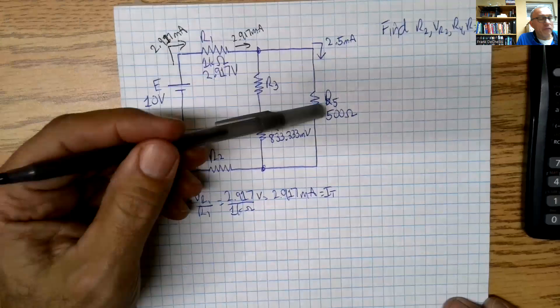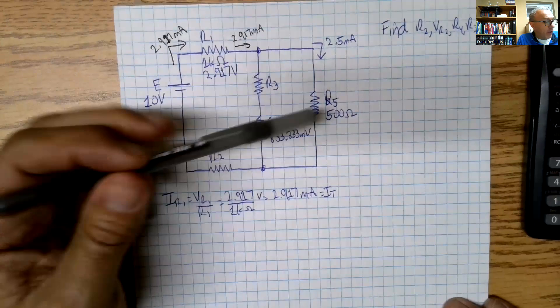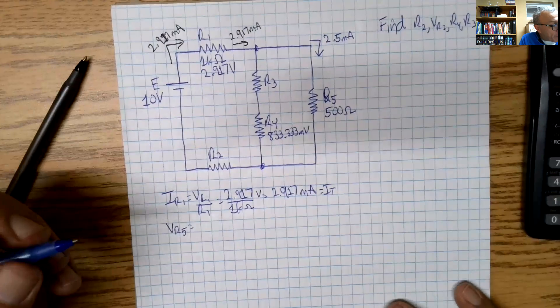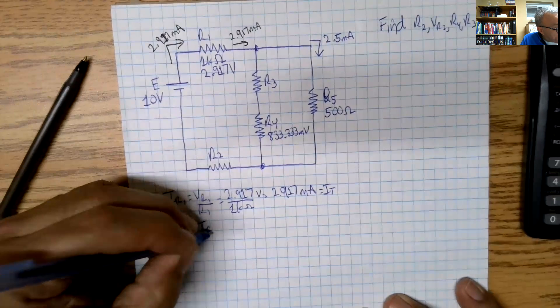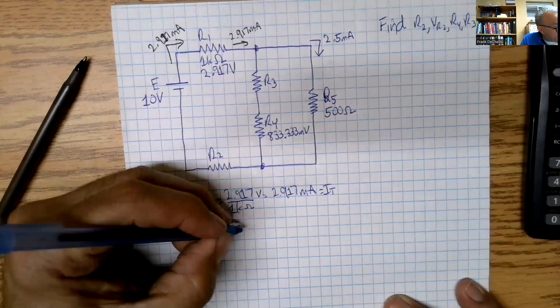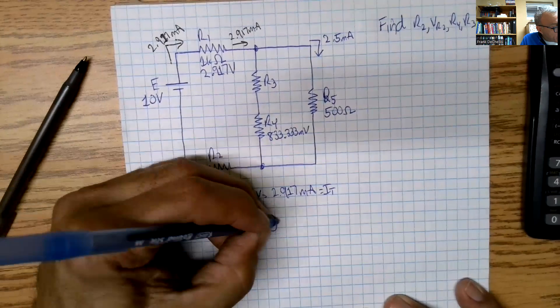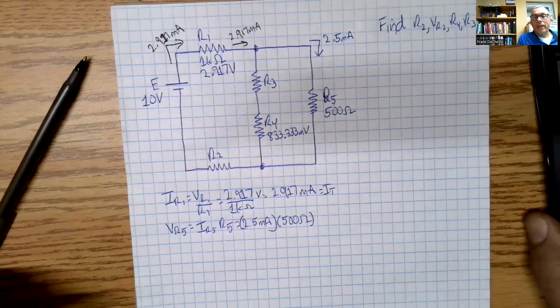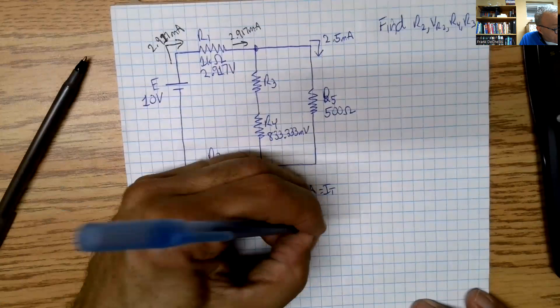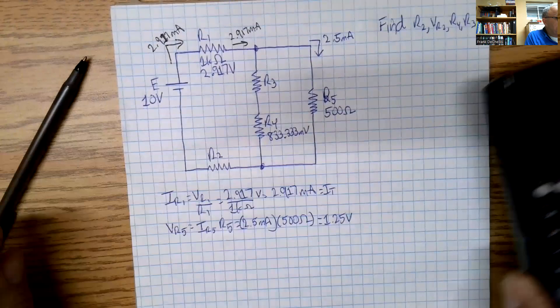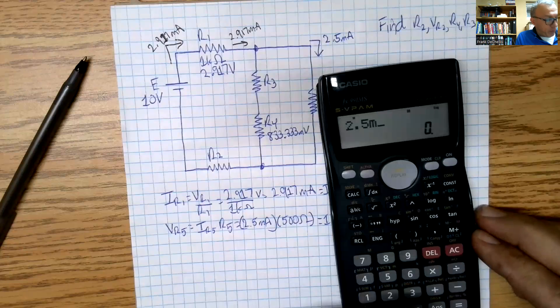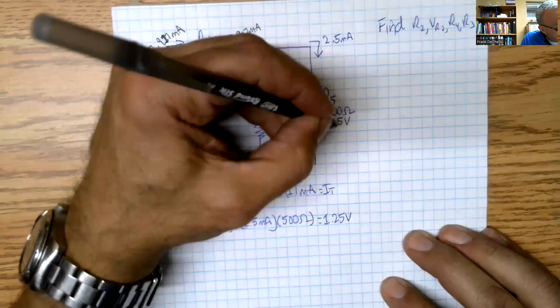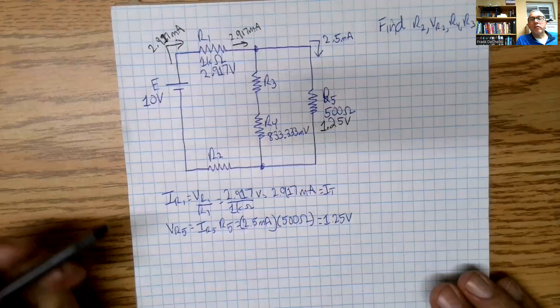We also have two values for R5. We have IR5 and R5, which means we can find VR5. So VR5 is equal to IR5 times R5, which is 2.5 milliamps times 500 ohms. If we calculate that out, it comes out to 1.25 volts. So we have 1.25 volts, we're slowly getting this together.